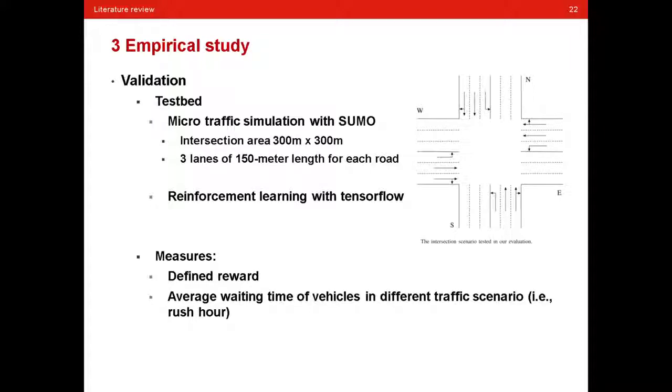And the measures to test the model include two parts. The first is the defined reward, which was mentioned before. And the other is the average waiting time of vehicles in different traffic scenarios, especially the rush hour, which is more meaningful for traffic light control.